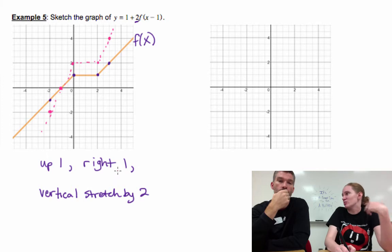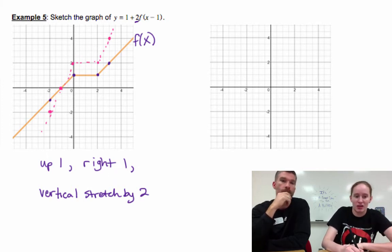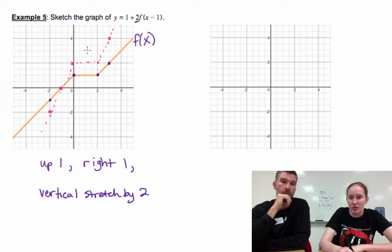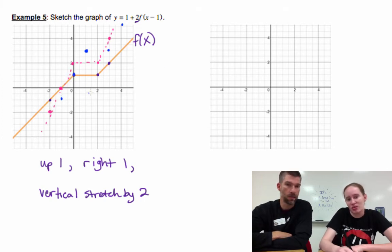Now we could do up one and right one really easily. Just move each point up one right one. This point goes up one right one, which is technically two tick marks. We're moving the pink dots up one right one.